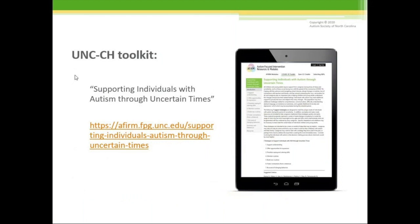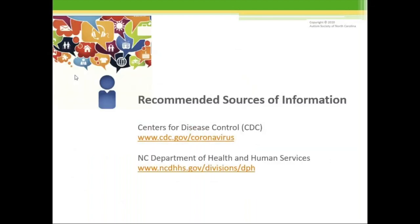The UNC Chapel Hill Toolkit also has great information about supporting individuals with autism through uncertain times, different social narratives, different visual supports. I recommend looking at that. And then this is a scary time for all of us, and there's a lot of information out there from different news sources, and I just want to urge you to make sure that you're getting information from reliable sources, primarily the Center for Disease Control and the North Carolina Department of Health and Human Services.